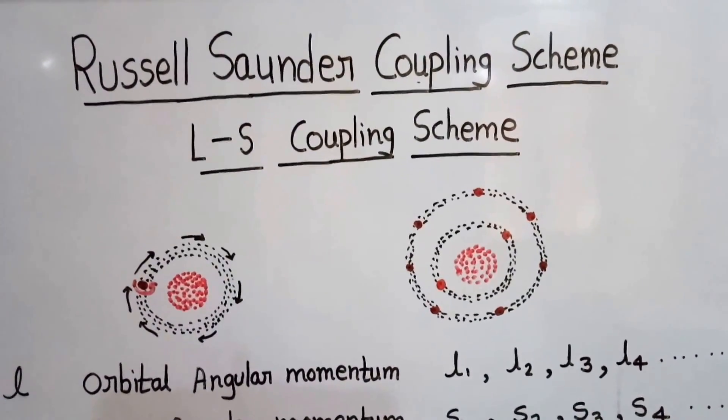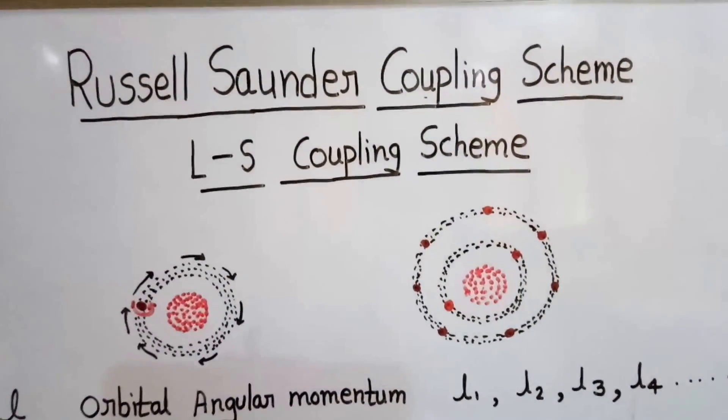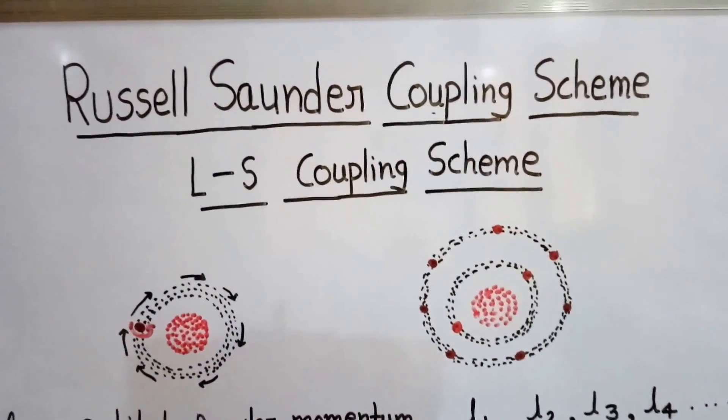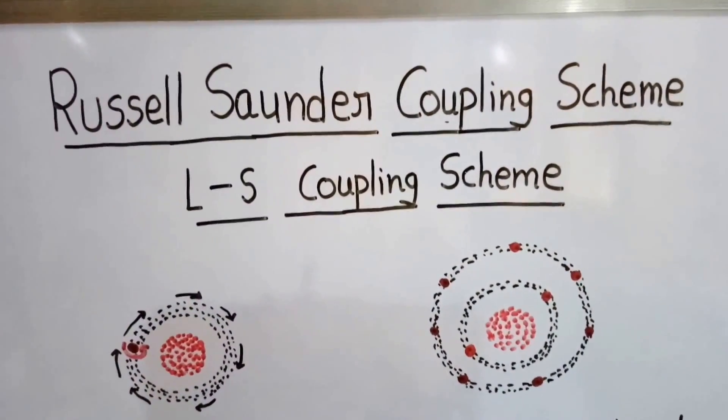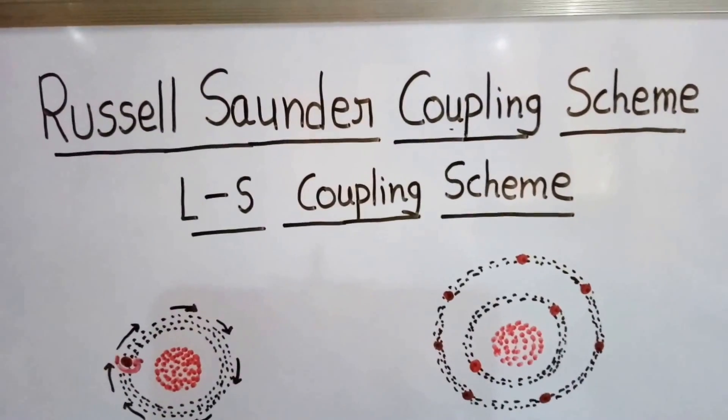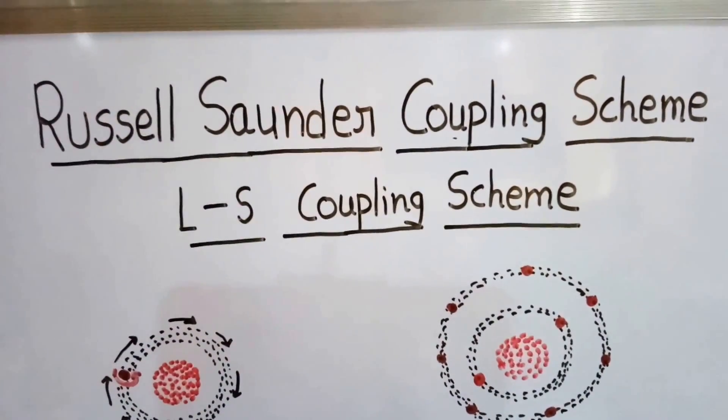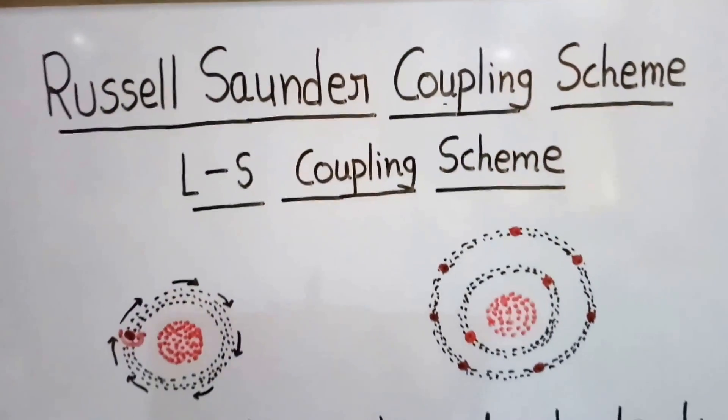Today we will study about the Russell-Saunders Coupling Scheme. This scheme is also known as the LS Coupling Scheme or Spin-Orbital Coupling Scheme.